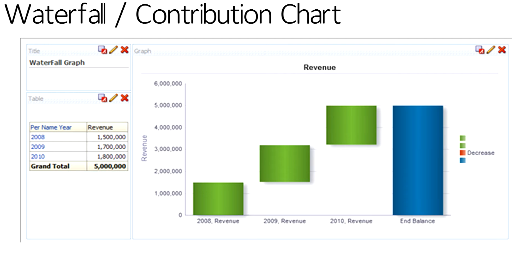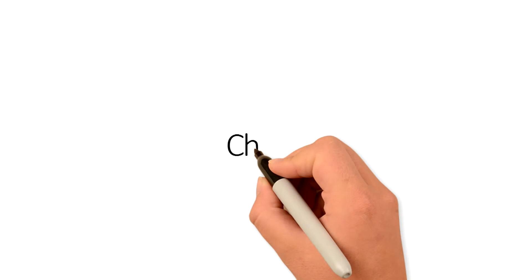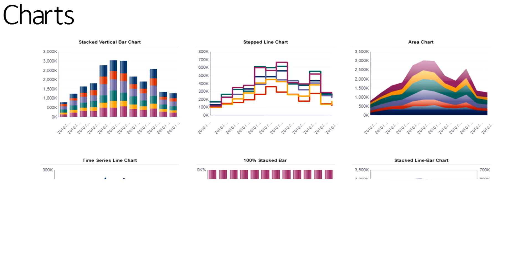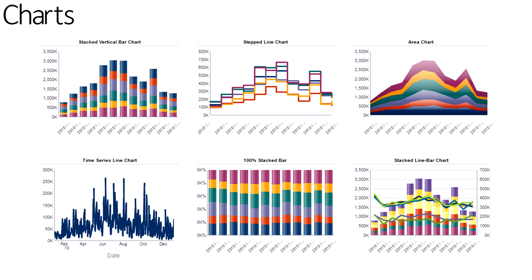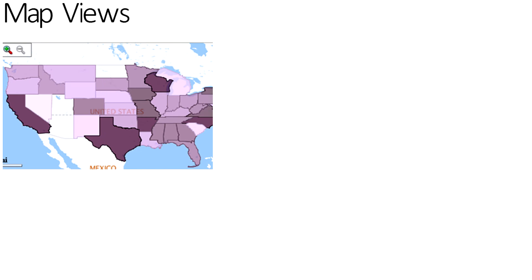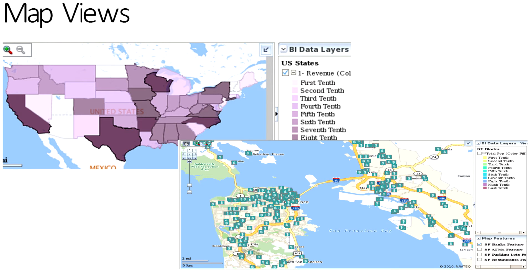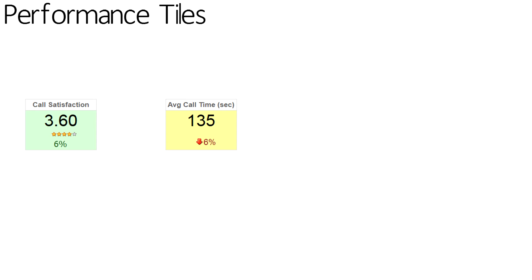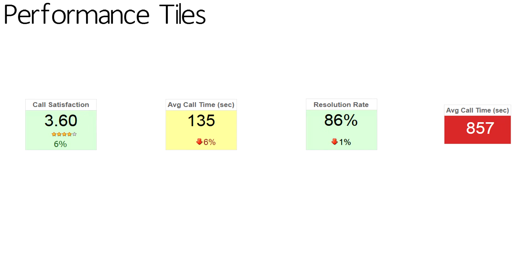One unique visualization is the waterfall and contribution chart, which allows the user to see how the sum of the parts affects the whole. There is a rich selection of chart options within OBIE — stacked 100% or stacked vertical, bar line charts, time series charts, pie charts. The six shown here are just an example. Map views are also available within OBIE, allowing users to get a better picture of their data and the geographic context and relation of data points. Performance tiles allow for a quick review of key data points and are often used on the first row of a dashboard.